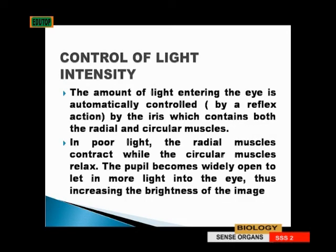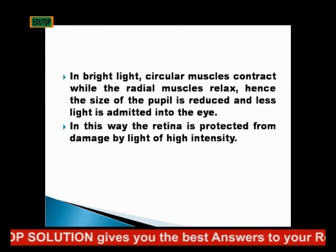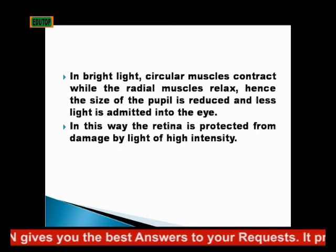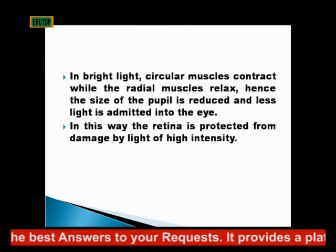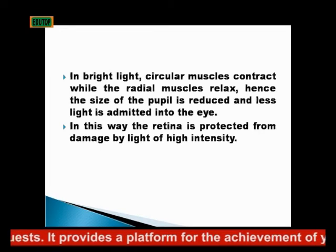Control of light intensity: the amount of light that enters the eye is automatically controlled by a reflex action of the iris. The iris contains both radial and circular muscles. In poor light, the radial muscles contract while the circular muscles relax, so that less light is allowed to enter the eye. In this way, the retina is protected from damage by high light intensity.